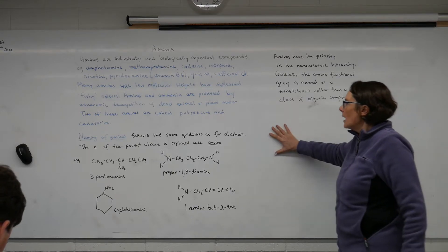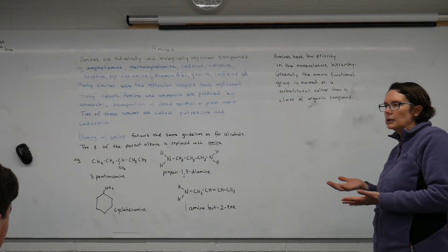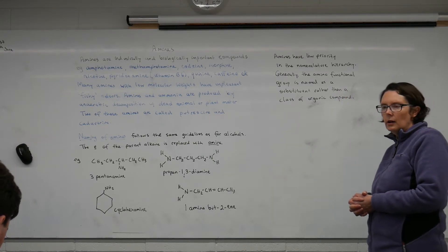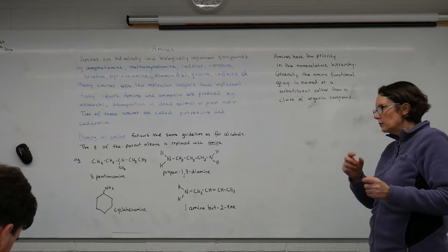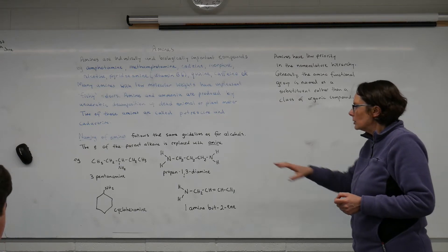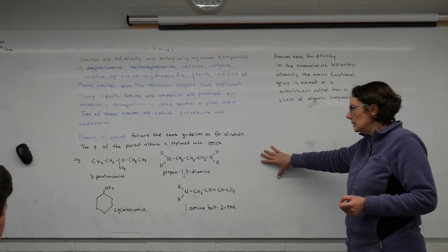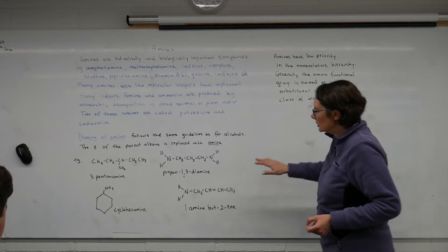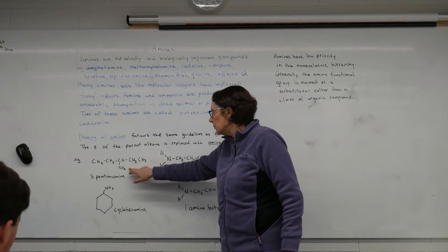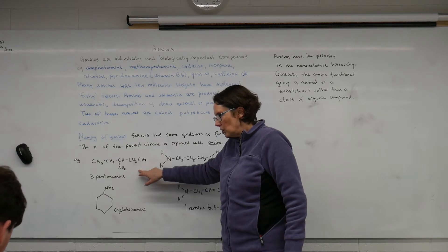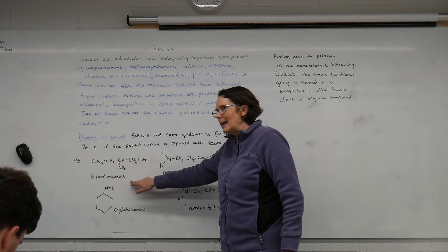Now when we're naming our amines, it's the same rule as naming for alcohols in that we just take the E off the end of the parent alkane, and instead of replacing it with 'ol' for the alcohol, we just replace it with 'amine'. And I've got a couple of examples here. We've got an amine, it's the only functional group present on this molecule, and so the amine part is at the end of the name.